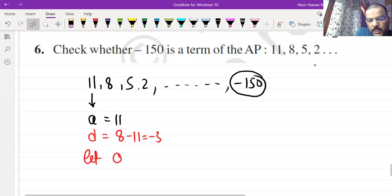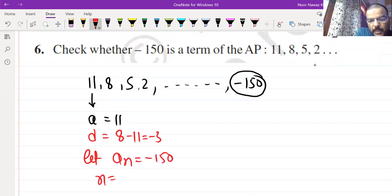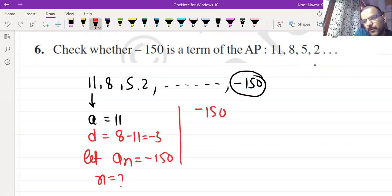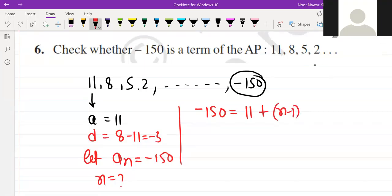Let, which term is the position, is AN. Minus 150. We have to be removed from N. What is the position? So, if you have direct, you can be able to keep it. Minus 150 will be A plus N minus 1 into D. And D is our minus 3.